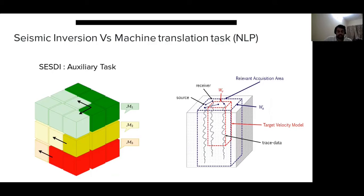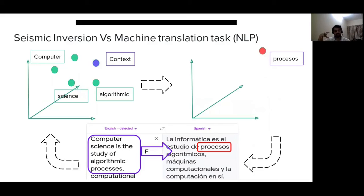For example, in the figure on the right, if you want to predict the velocity cube which is in red, you would only look at the set of traces that lie inside a relevant acquisition area around this particular block. Now, once we have this context and you want to predict a small velocity block, how do we design the architecture for this model?